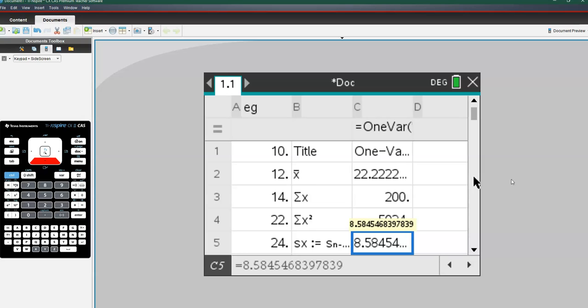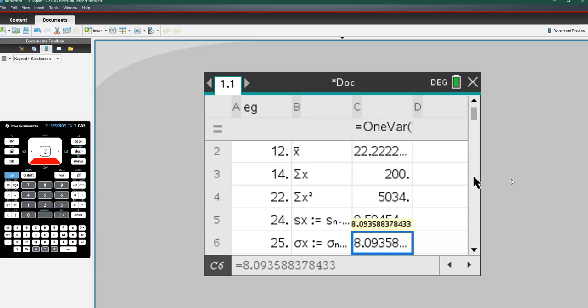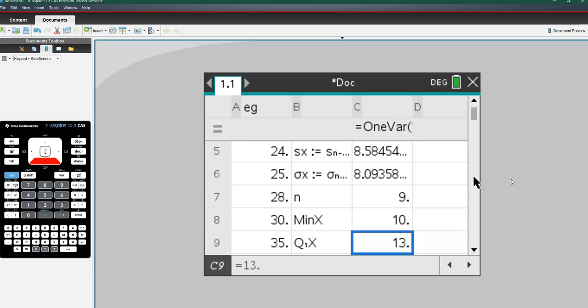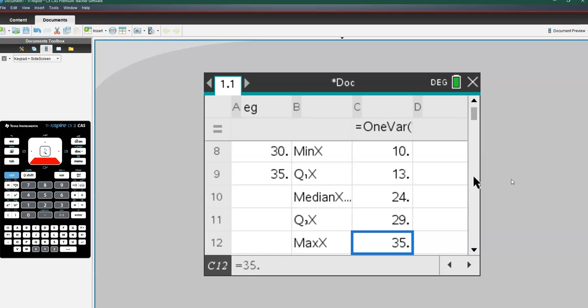SX is our standard deviation. We also have a population standard deviation, which we'll talk about more later, but it's not one that we concentrate on. It's just the sample standard deviation that we'll use. We then get the number of data values, nine, the minimum, Q1, median, Q3 and maximum. So those five numbers we can see on the screen now, five statistics, form the basis of our box plots. That's our five number summary.